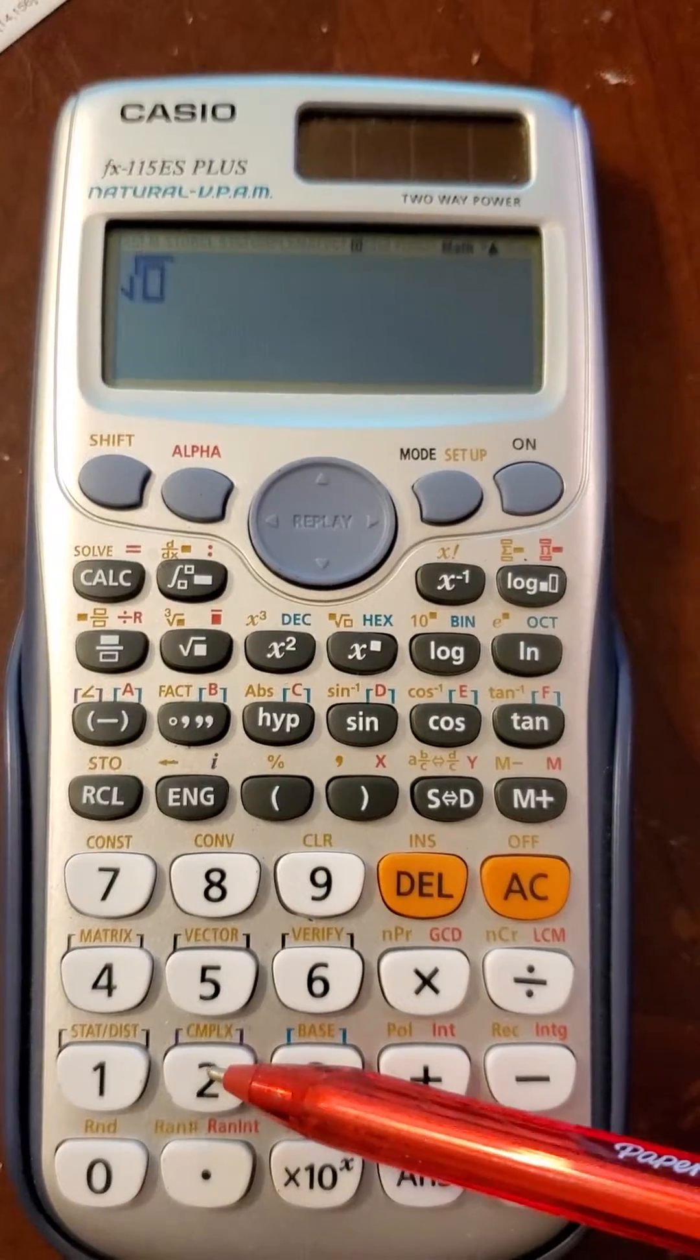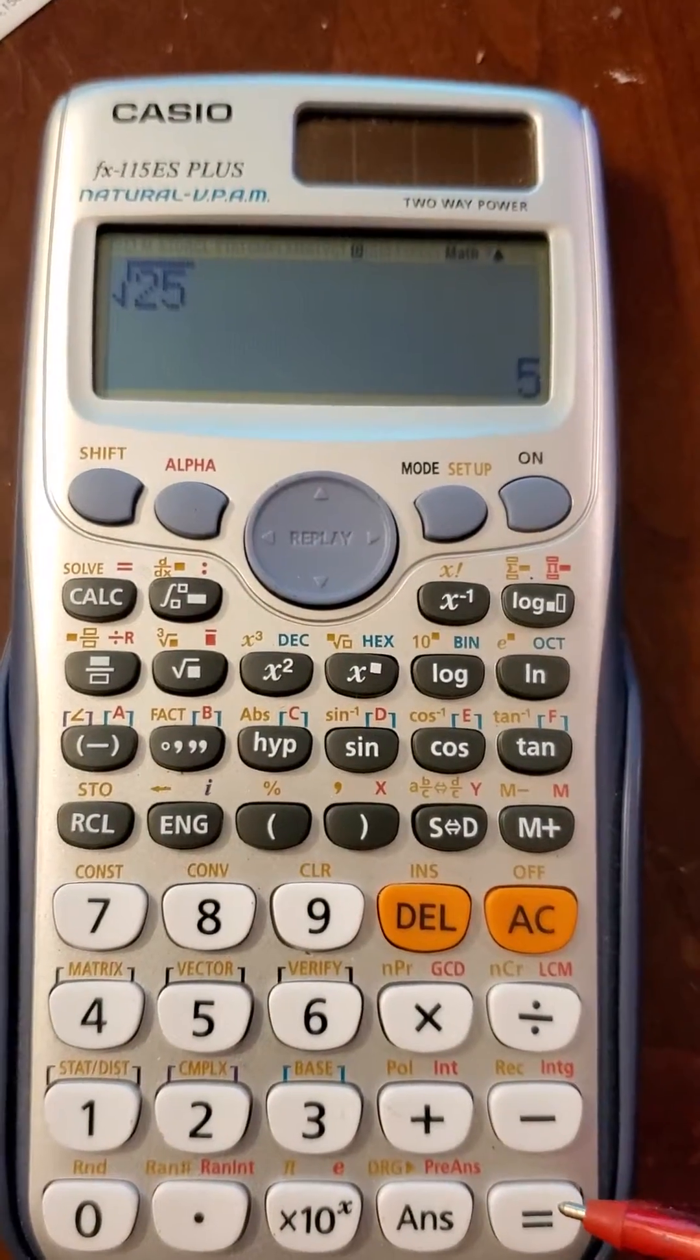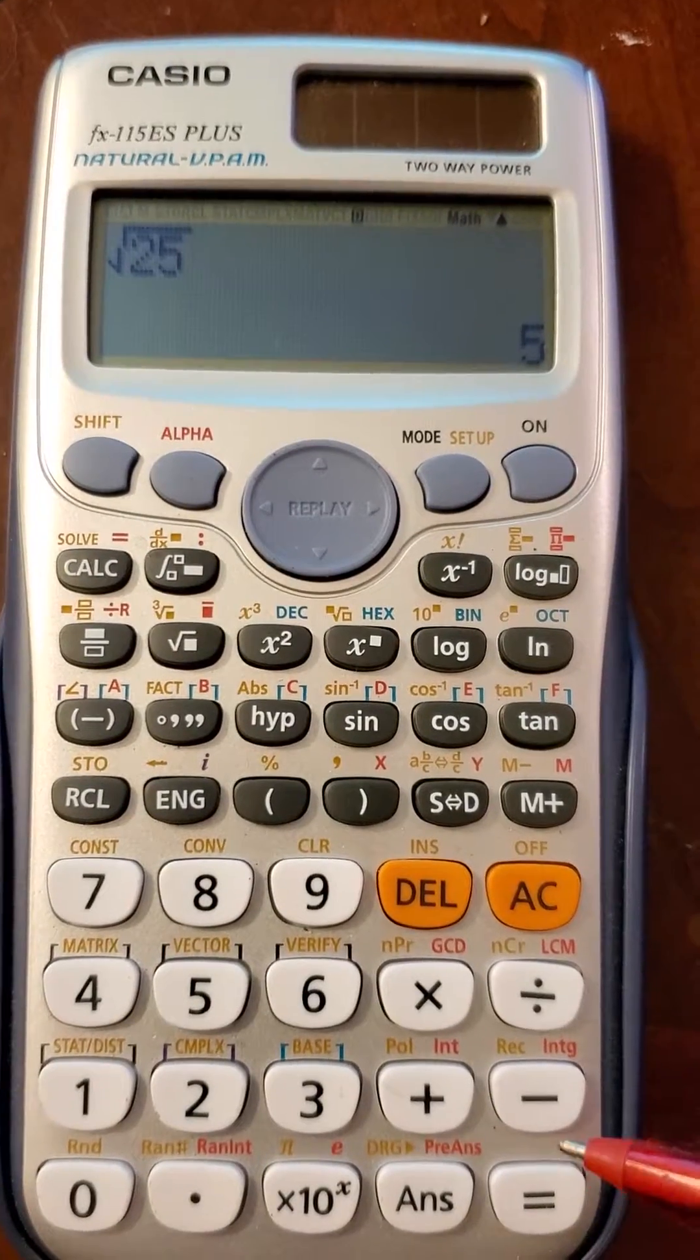Just for a basic example, let's do square root of 25. If I hit equals, no surprise, that is 5.